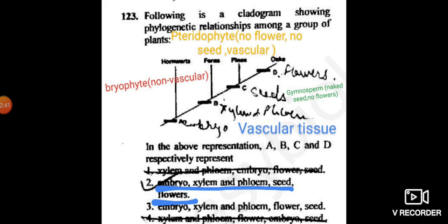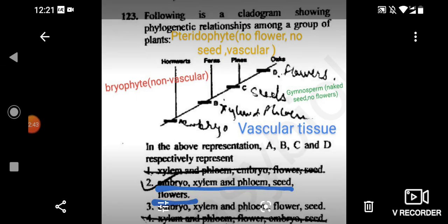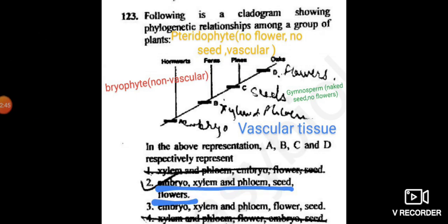A can't be xylem and phloem because the vascular tissue is not present in the bryophytes. In this manner, you can exclude option number one and option number four.